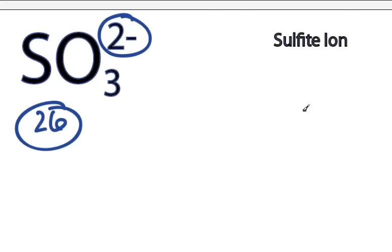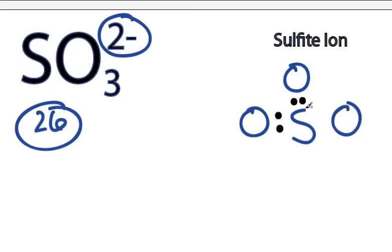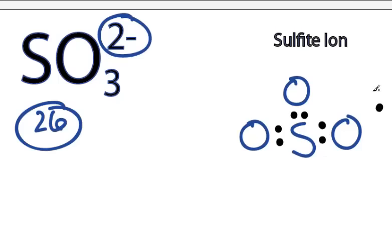Let's put the sulfur at the center and the oxygens around the outside. Put two electrons between the atoms, form chemical bonds. We've used 6. And then around the outside atoms. So we have 6, 8, 10, and 24.